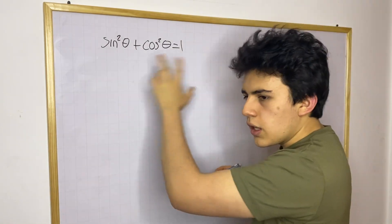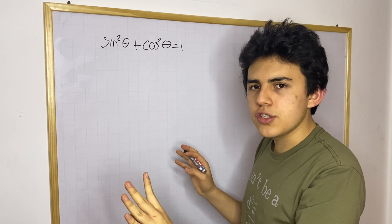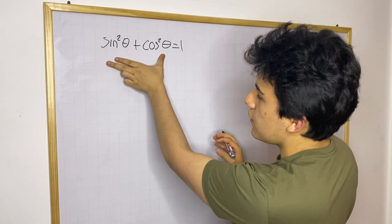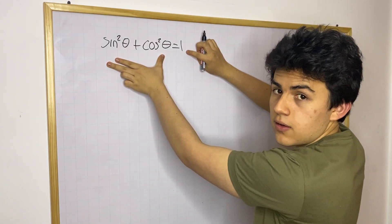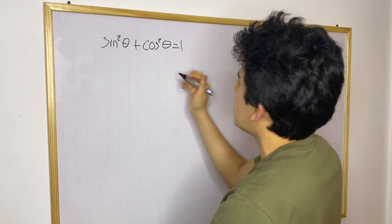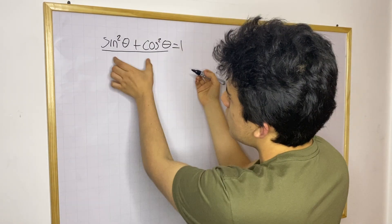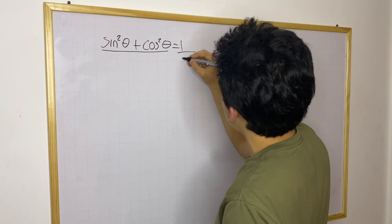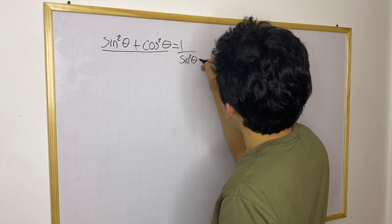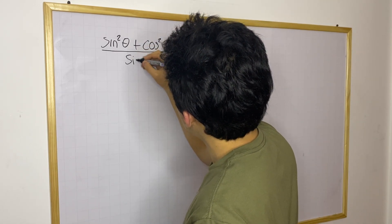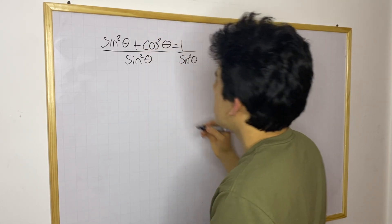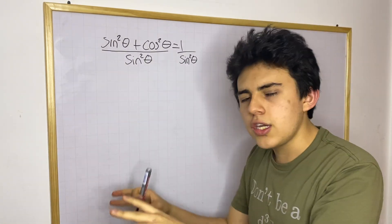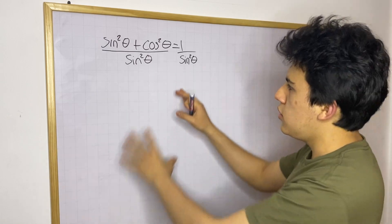Remember, you can play with an equation in any way you want, as long as anything you do on the left side you also do on the right side. So what we're going to do is divide both sides of the equation by sine squared theta. When you do this, you're not changing anything in the equation — you're simply creating a change that will be uniform. So you can do that.